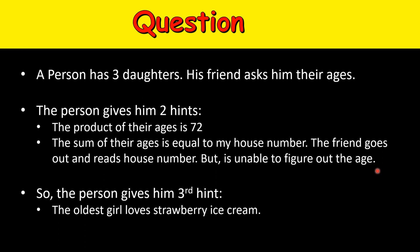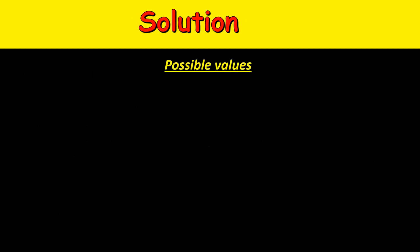Now let's see the solution. First of all, what are the possible values so that their product is 72? There are three daughters with some positive number as the age. The product of three numbers is 72, so there are many possibilities. First possibility is 1 multiplied by 1 multiplied by 72.